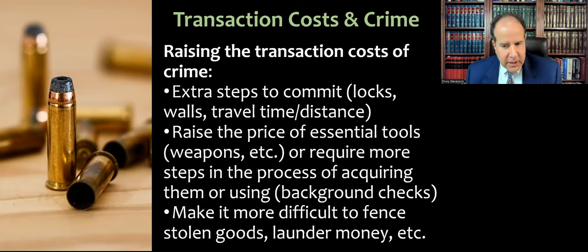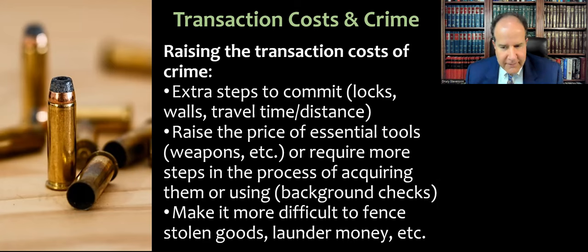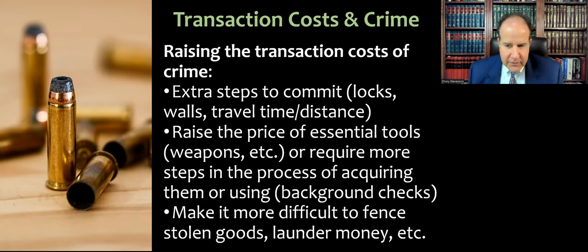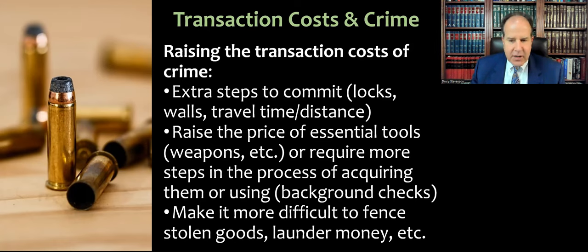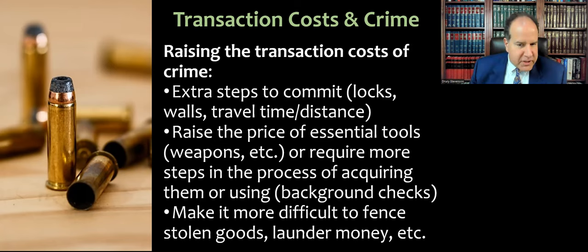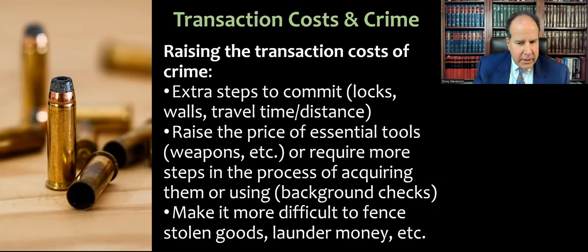We can also raise the transaction costs for fencing stolen goods, making it difficult for people to sell things after they're stolen, or to launder money. For example, there's a federal law that financial transactions like wire transfers have to be reported if they involve more than a certain amount of money. To work around this, people who want to launder money will break their transactions into smaller amounts. That's not a perfect workaround because it raises the transaction costs — now they have to keep track of a lot more smaller transactions. It's a hassle. They may still do it, but forcing people to break transactions into smaller increments does, at least to some extent, raise the transaction costs. Maybe not enough to deter the crime, but at the margins it could make a difference or make it easier to detect and catch people.